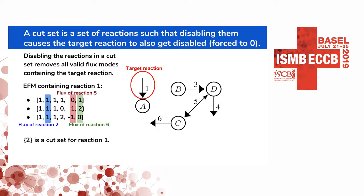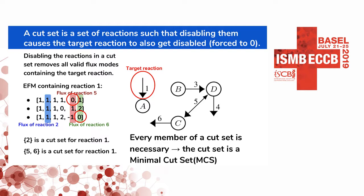Now let's look at reactions five and six. Reaction five or reaction six alone doesn't appear in every flux mode containing reaction one, so absence of each alone doesn't cause reaction one to get blocked. But removing reactions five and six together will cause reaction one to get blocked, since together they contribute in every elementary flux mode containing reaction one. Minimal cut sets are cut sets which cannot be reduced — every member is necessary for blocking the target reaction. If you remove any member of a minimal cut set, the remaining set would not block the target reaction.